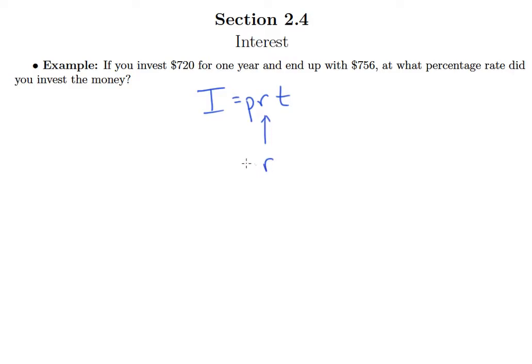Okay, so do you know P? Well sure, you invest $720, right? So 720 times R, and we do that for one year, right? So we put a one in for T.